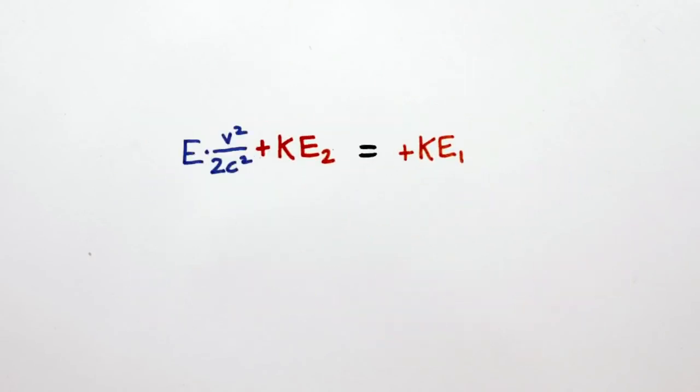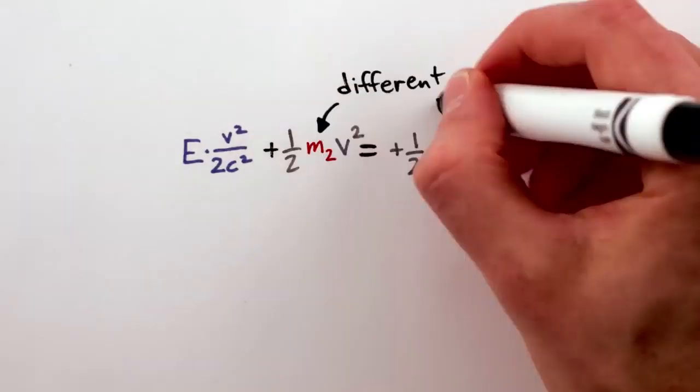Rearranging, we see that the kinetic energies before and after the flash must be different. And the kinetic energy of an object is one half of its mass times its velocity squared, but we know that the velocity was the same in both cases. So in order to account for the difference, the cat's mass must change when it emits the flash of light.